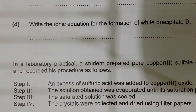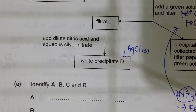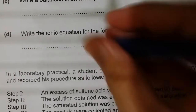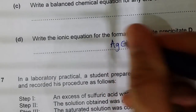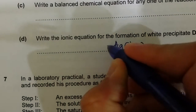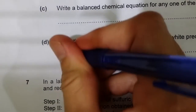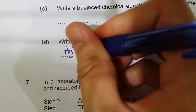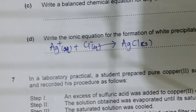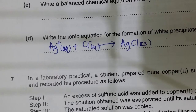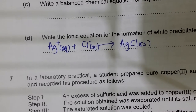For the ionic equation for the formation of white precipitate D (silver chloride): AgCl(s) is formed from Ag⁺(aq) + Cl⁻(aq) → AgCl(s). This is a shortcut for writing ionic equations — when only one substance is not aqueous, you can write it directly in this simplified ionic form.